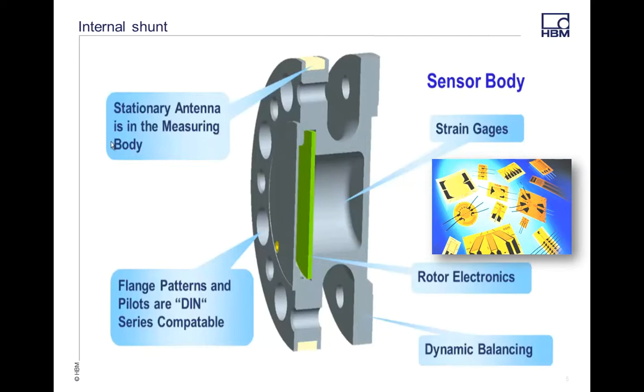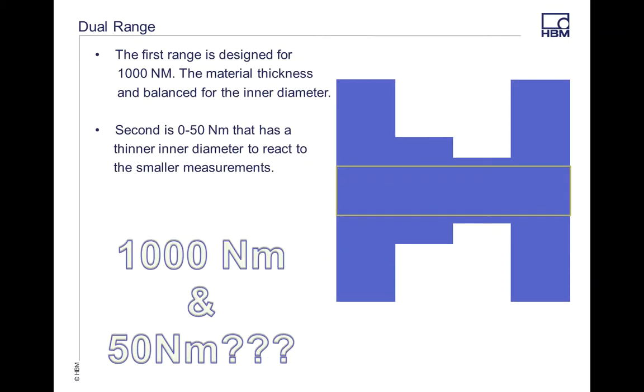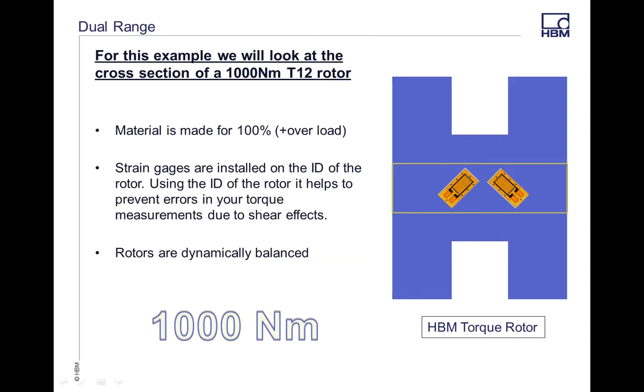Let's dive into this rotor a little bit and figure out if there's an actual dual range. On our rotors themselves, they're all machined and balanced for a specific range. In this example, I have a 1,000 newton meter transducer. The metal that's on the actual transducer is set up for the 1,000 newton meters. That's the normal range.